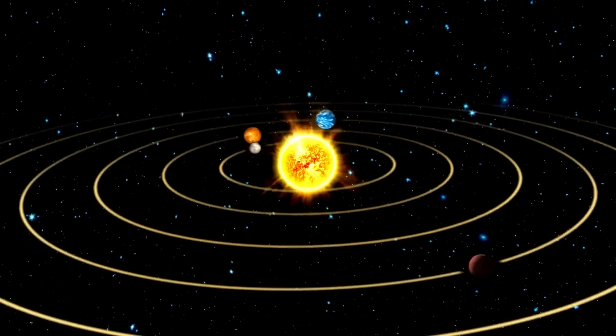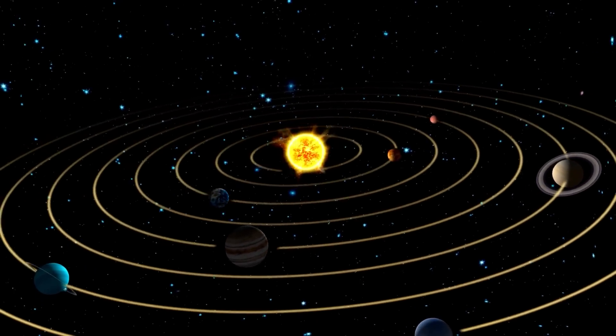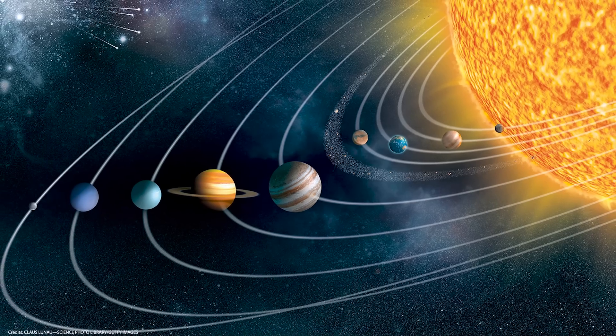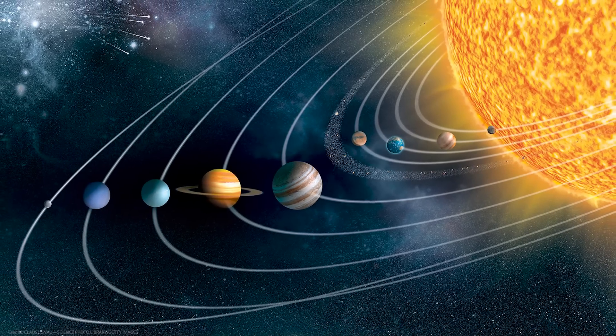When it comes to the shape of the solar system, most people think it looks like a flat circle, but little do they know about the real shape of the solar system. It was an oval.